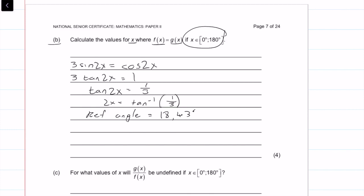So that's one solution, but it says between 0 and 180, so there's multiple solutions. So what we can say is that 2x is equal to our reference angle plus k times 180 degrees, where k is 1, 2, 3, etc., because the tan graph repeats itself after 180 degrees. Then I'm going to divide everything by 2, so that gives me 9.22 degrees plus k times 90 degrees.